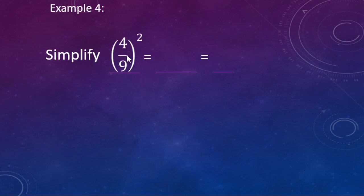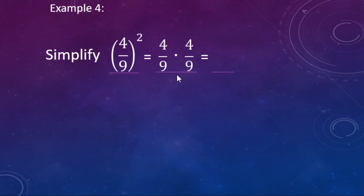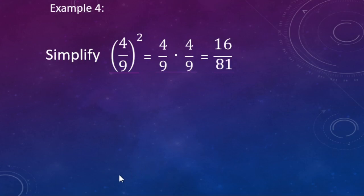We're going to simplify four-ninths to the second power. We have two factors of four-ninths being multiplied: one factor of four-ninths times a second factor of four-ninths. Doing regular fraction multiplication — numerator times numerator: four times four is 16; denominator times denominator: nine times nine is 81. So the answer is 16 over 81. A shortcut: the power of two applies separately to numerator and denominator — four squared is 16, nine squared is 81.